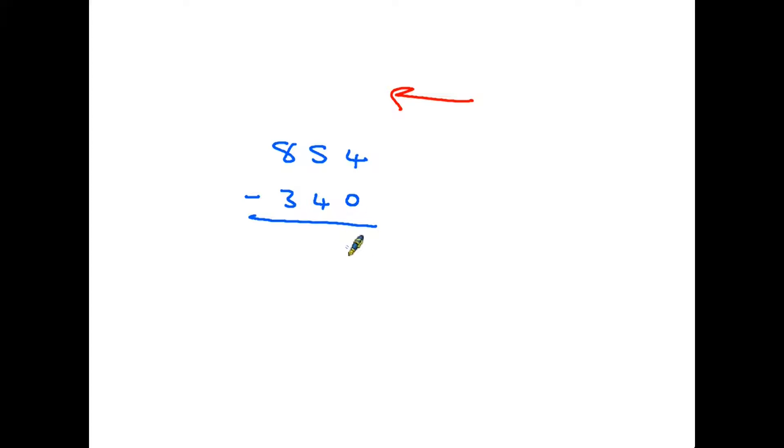So four take away nothing, you would still have four. Five take away four would leave you with one. And eight take away three would leave you with five. And there's your answer.